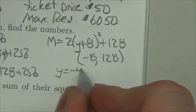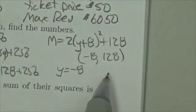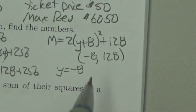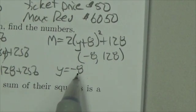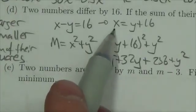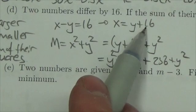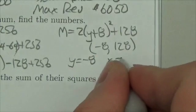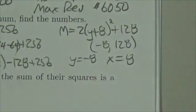So y is equal to negative 8. Now remember, that 128 is the minimum sum of their squares. And so if you take a quick look at the original formula here for x, x was equal to y plus 16. Well, if y is negative 8, we can conclude that x must be 8. And so those are my two numbers.